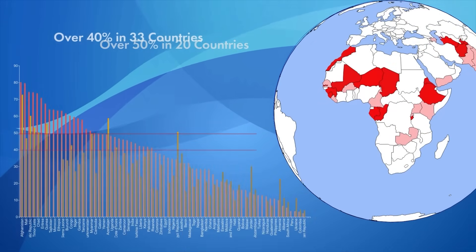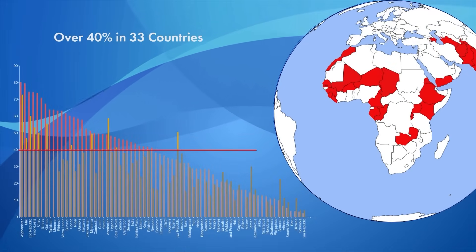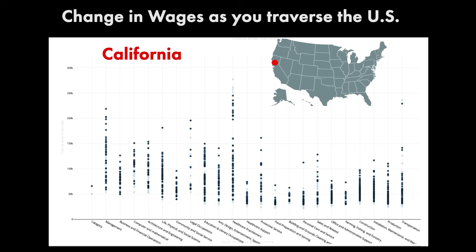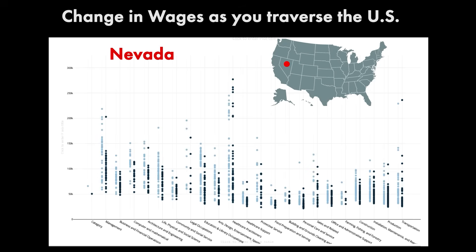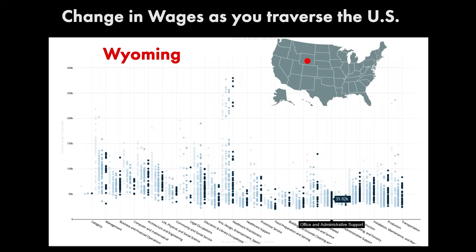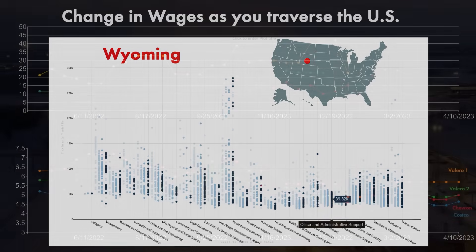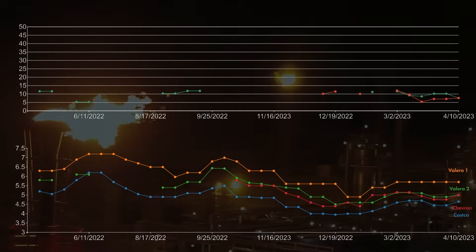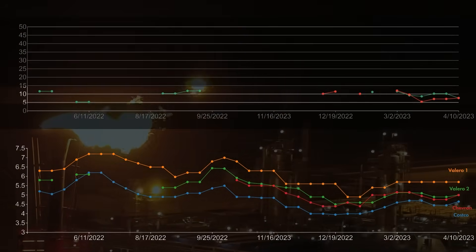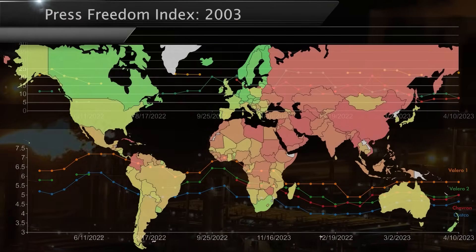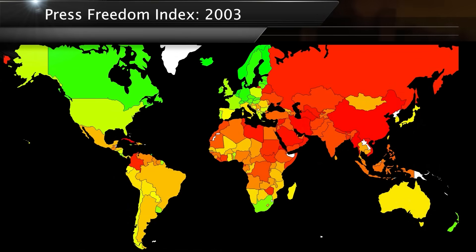This lets you create data visualizations right within the NLE, making it much easier to tell the stories you're using data to support. One big feature is the ability to support multiple datasets and transition between them, as we've done here with yearly data.